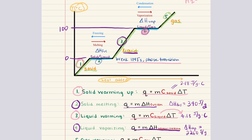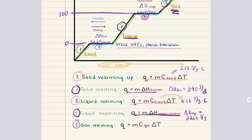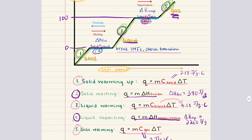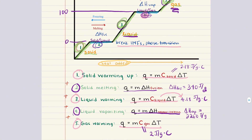Once all the liquid has vaporized, we are in segment five: the system is entirely in the gas phase. Any additional heat again increases temperature, calculated using Q = m × C_gas × ΔT. For water vapor, C_gas is about 2 J/g·°C. To summarize: phase changes occur at constant temperature and involve enthalpy terms (ΔH_fusion or ΔH_vaporization), while temperature changes within a single phase are described by Q = mcΔT. Each segment of the heating curve must be treated separately. If a problem asks for total heat across multiple regions, calculate Q for each segment and add them together, applying the correct equation for where you are on the curve.